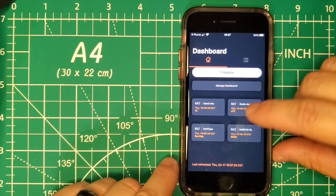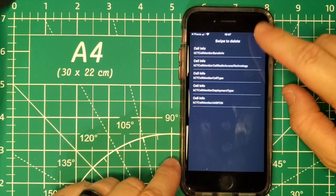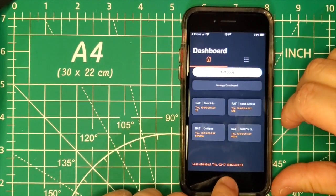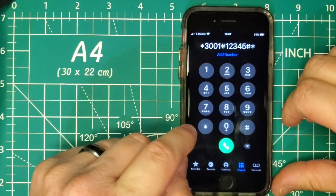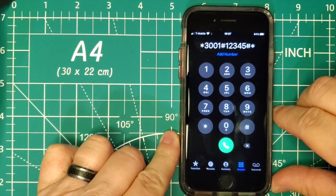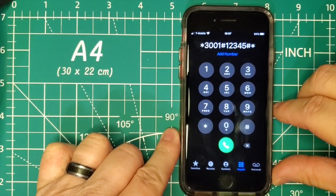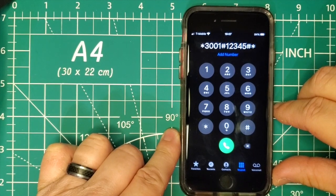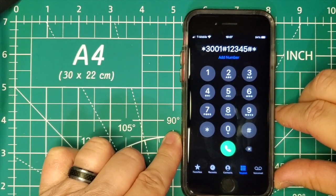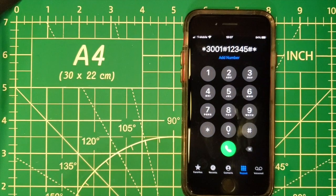That's pretty much it. If you want to get out of it, just back out. The code is star 3001 pound 12345 pound star.